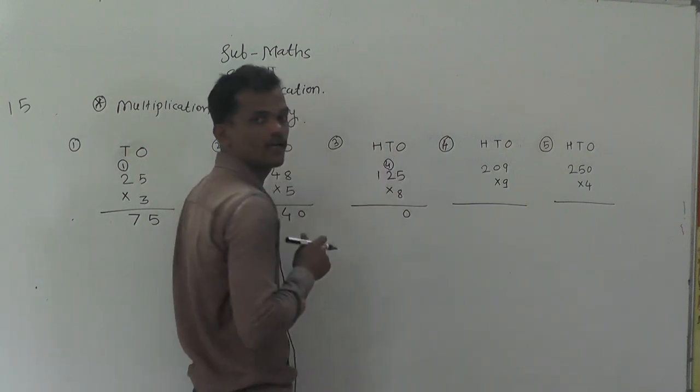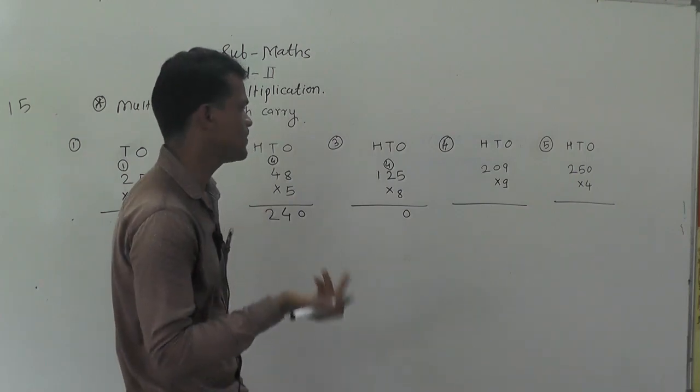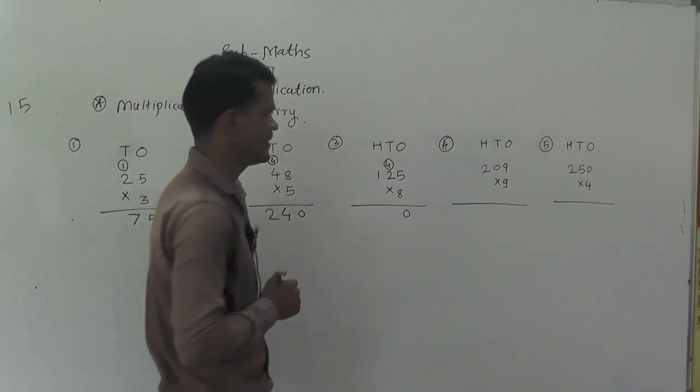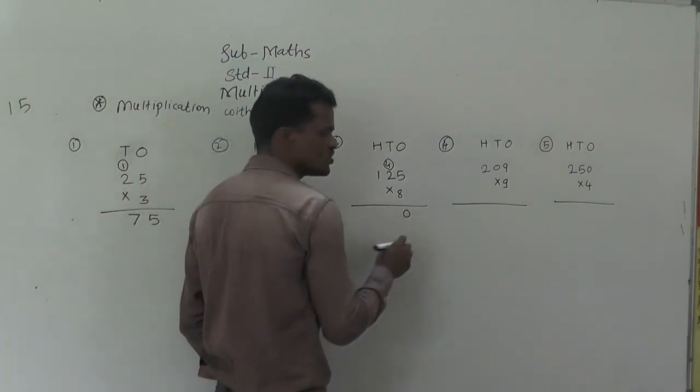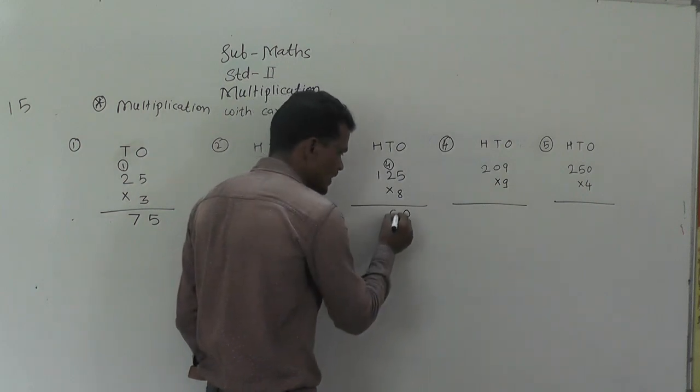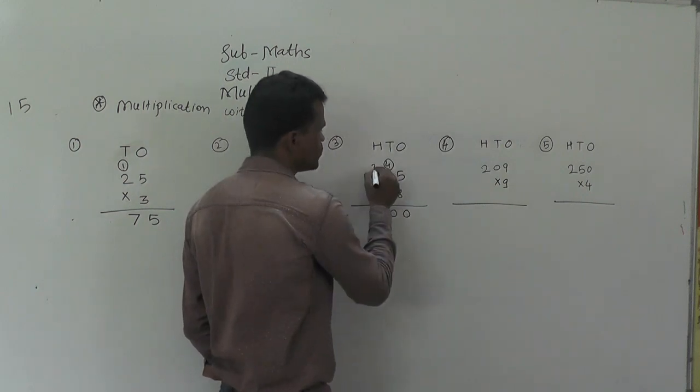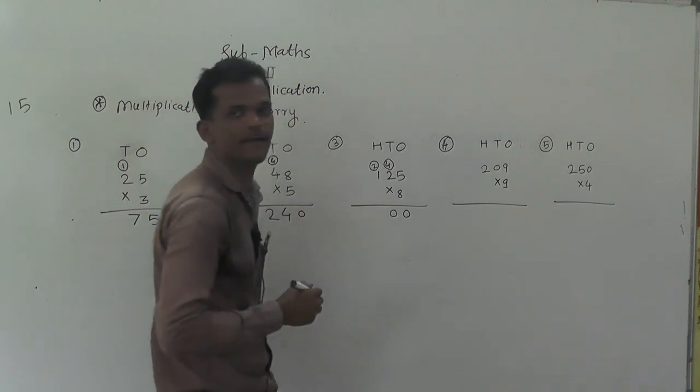Now, 8 times 2 is 16, 16 plus 4 equals 20. 0 right here and 2 carries to the hundreds place.